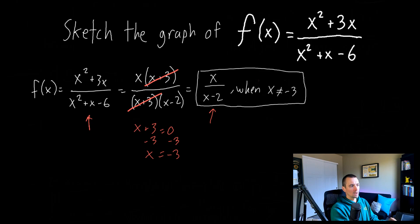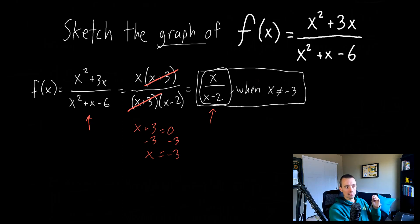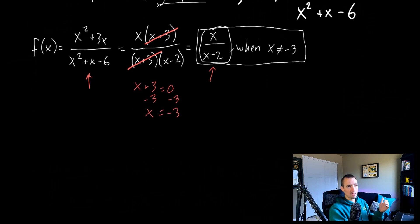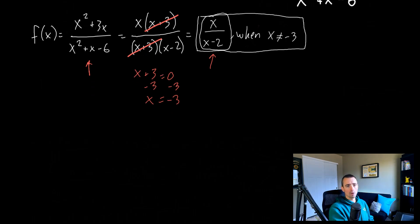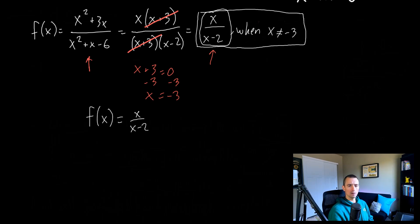So this is the simplified version of our function. The x = -3 is kind of an issue — we can't plug x = -3 into the original function. But how does that actually show up in the graph? Well, basically what that tells us is if we graph x/(x - 2) and then just remove the point at x = -3 and put a hole right there instead, that's what the original function will look like. So let's think about what horizontal and vertical asymptotes this function has. Considering f(x) = x/(x - 2), this is going to have a vertical asymptote at x = 2, and it's going to have a horizontal asymptote.